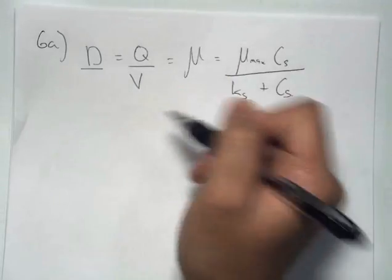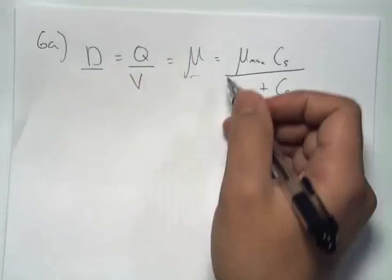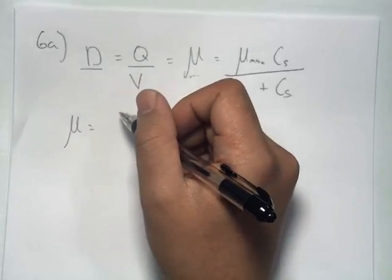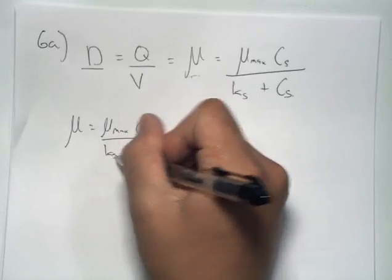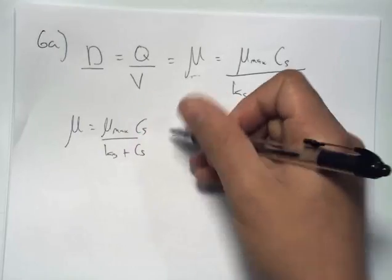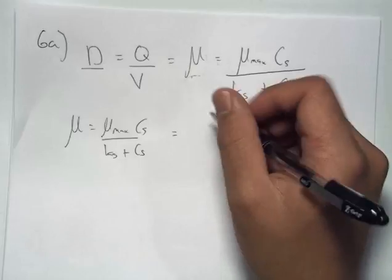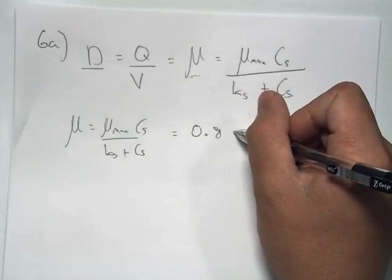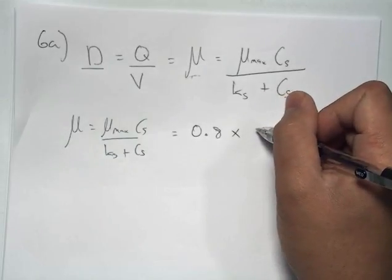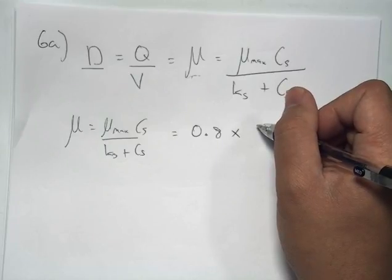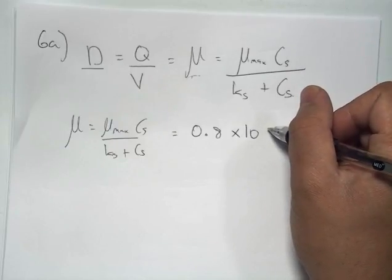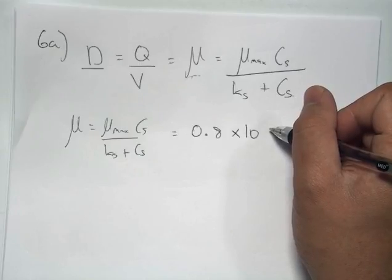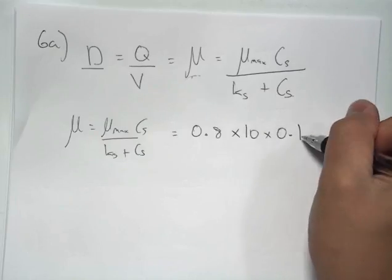We'll first begin by calculating the specific growth rate for the cells in this process. We have μ equals μ_max C_s over K_s plus C_s, and we can substitute in our values given in the question. 0.8 for our maximum specific growth rate, multiplied by the concentration of our substrate. Considering that there's a 90% conversion of substrate, it will therefore be 10% left at the end, hence multiplying it by 0.1.